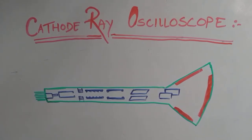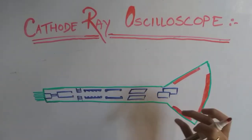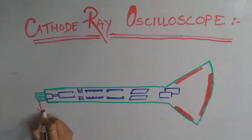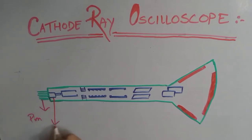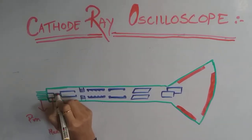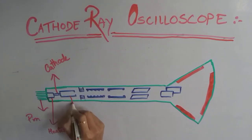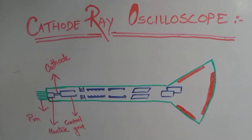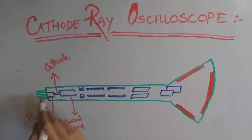The electrons are first emitted from the electron gun, which then transforms them into a narrow beam and focuses them on the fluorescent screen. These are the pins through which all the electrons are connected. Then we have a heater, an indirectly heated cathode, and a control grid.